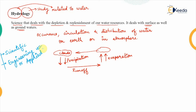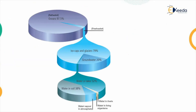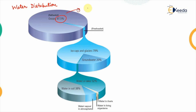Before moving to the applications of the hydrological cycle processes, we need to understand where water is present on the earth's surface and in what amount. Looking at the water distribution chart: out of 100 units of water, 97.5 units are present in the oceans as salt water, which requires further treatment for consumption. That means only 2.5 units are present as fresh water which can be consumed.